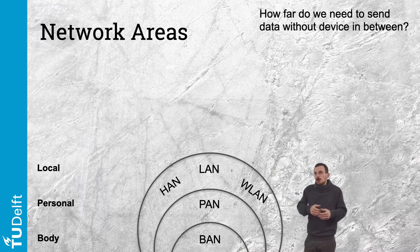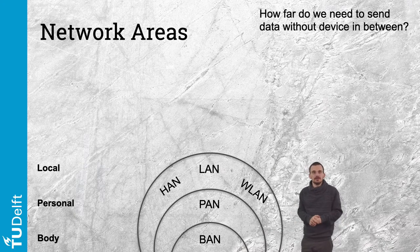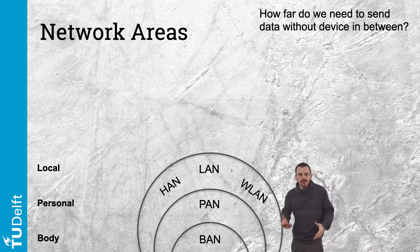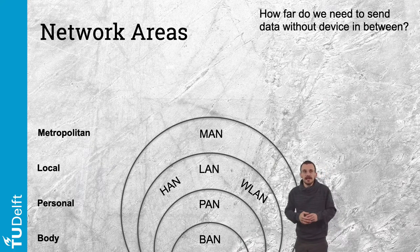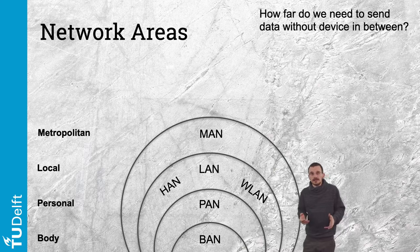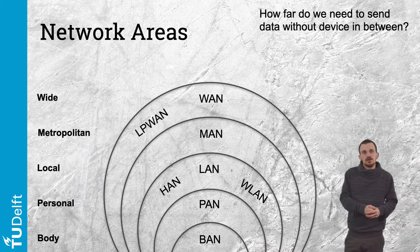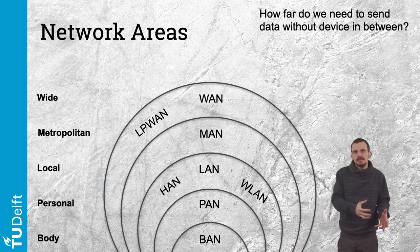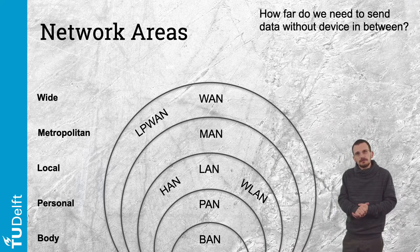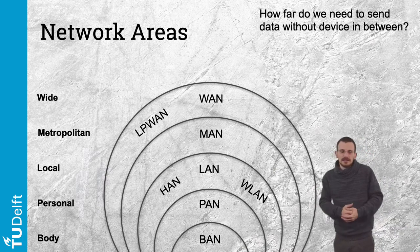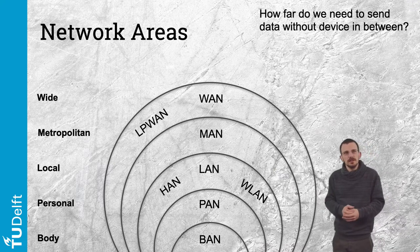Local Area Network, or LAN, is the next step, covering a building. In this range we also refer to Home Area Network (HAN) or Wireless LAN (WLAN), which emphasizes the wireless property of the network as opposed to wired. The Metropolitan Area Network, or MAN, connects LANs in urban areas at the scale of a large city. Wide Area Network, or WAN, is designed to bridge the gap between MANs, connecting urban areas across wide areas.